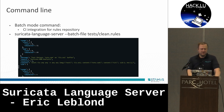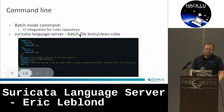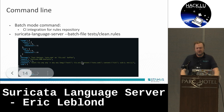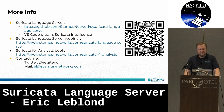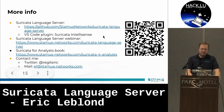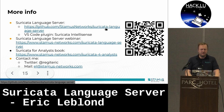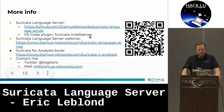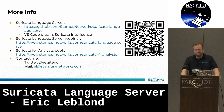Here is a sample of the command line output — you get directly the information about what you have in the signature as a performance problem. You can download it from GitHub. Documentation and the landing page are there for the Suricata Language Server, and there is a Visual Studio Code plugin available for VS Code users.